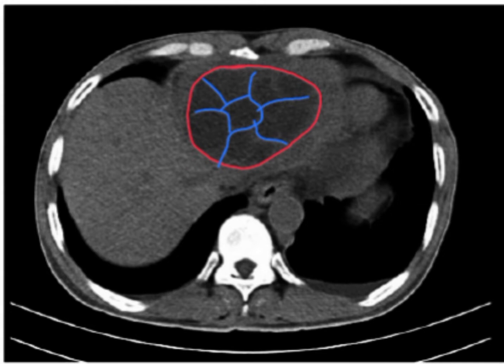CT scan is the best test overall for the diagnosis of hydatid cyst, but you must remember that this diagnosis is made by a combination of good history, clinical examination, serology, and imaging. In the differential count, eosinophilia will be found, and for serology you will order ELISA and immunoelectrophoresis.